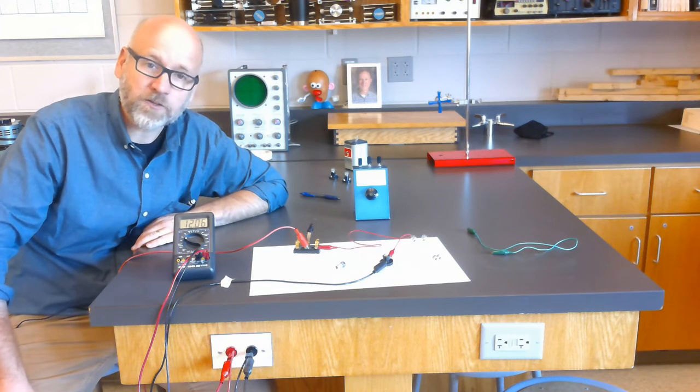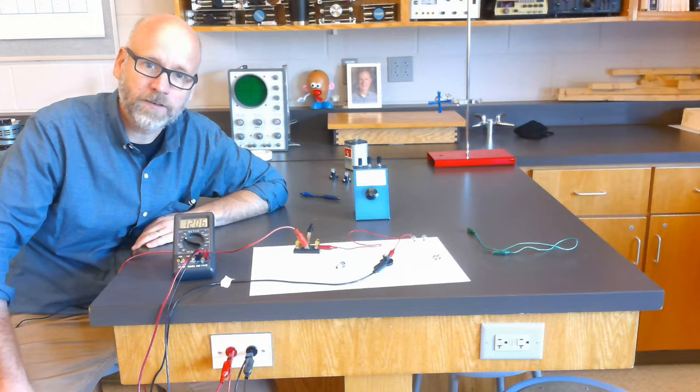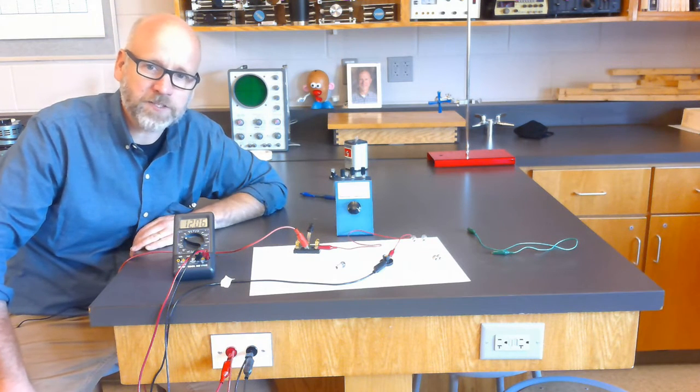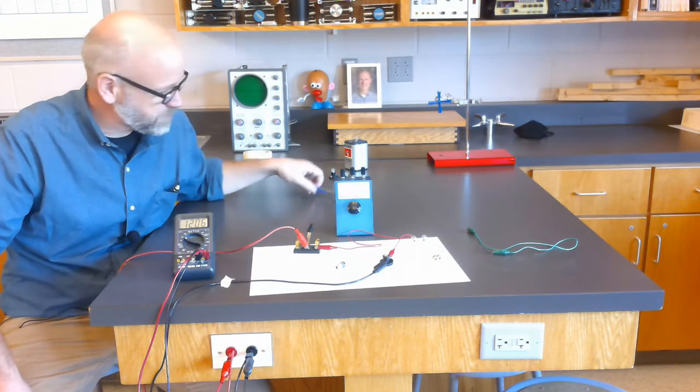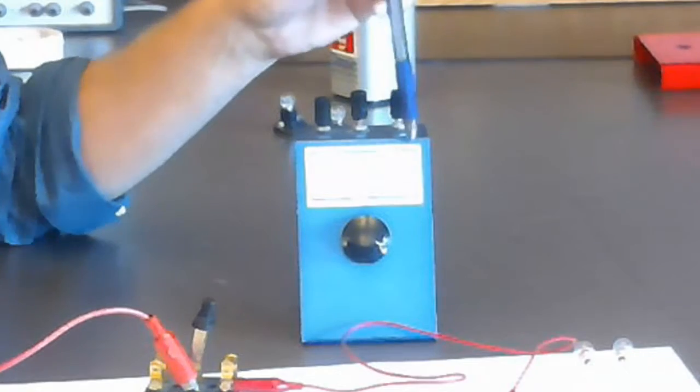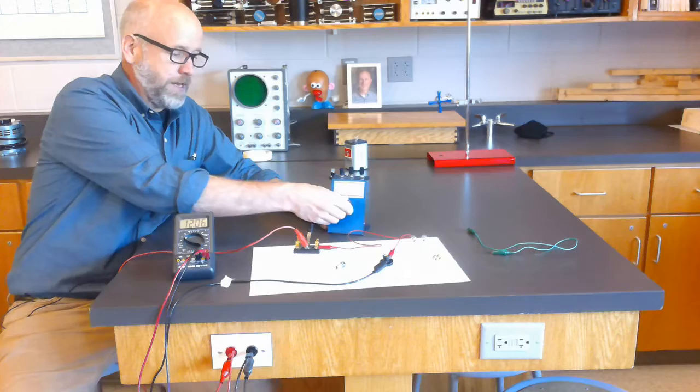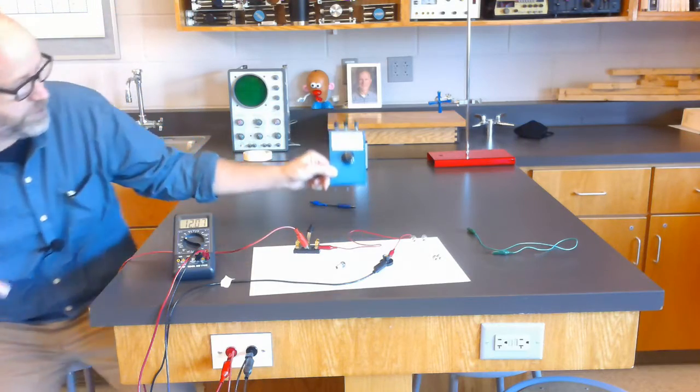All right, so how do I design this circuit so that that doesn't happen? Why don't I use a variable resistor? Now this variable resistor allows me to adjust between 0 and 35 ohms by turning this knob.